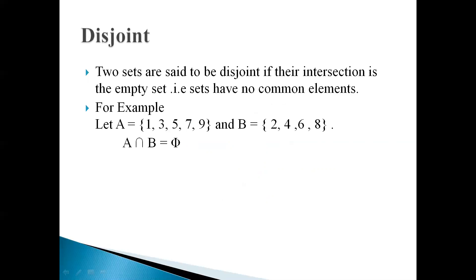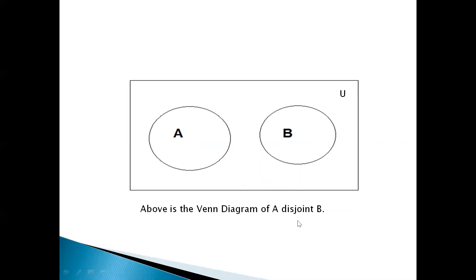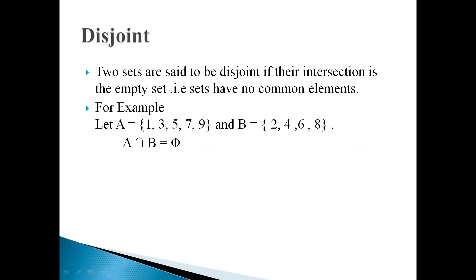Then, if two sets don't have any common element, then in the Venn diagram, A and B are both a subset of universal set U, but A and B do not have any common element. So that its answer is equal to null. The definition of disjoint set: two sets are said to be disjoint if their intersection is the empty set, that is the sets have no common elements.